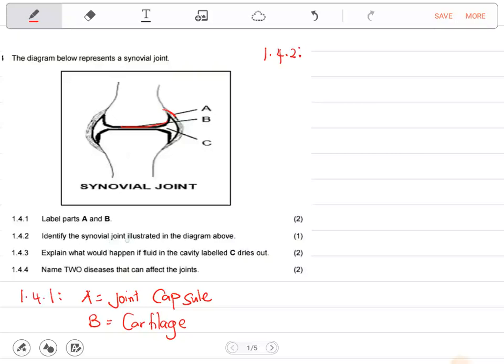Identify the synovial joint illustrated in the diagram above. This is a hinge joint. It's not a ball and socket. You can clearly see - if it's a ball and socket, you could have had something like this, then something inside like this, but we don't have such. This is just a hinge joint.